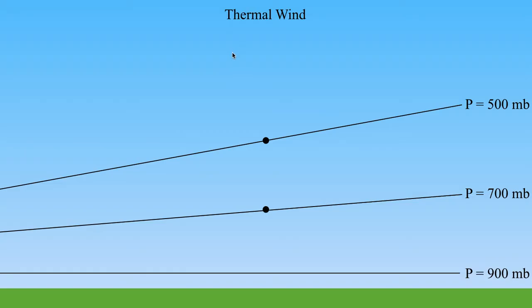Let's take a look at what this actually looks like in the atmosphere by examining a vertical cross section. As I go up the screen, I'm going vertically upward in the atmosphere. As I go from left to right, I'm going from west to east. And as I go into the screen, that would be going north; out of the screen would be moving south. Let's take a look at this isobar down here, which is a perfectly flat isobar, along with two other points marked higher up.